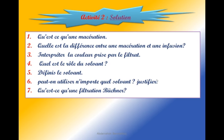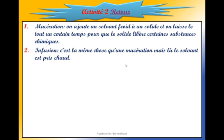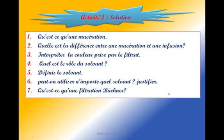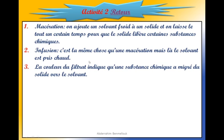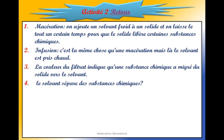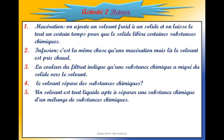Interprète la couleur prise par le filtrat : la couleur indique qu'une substance chimique a migré des solides vers le solvant. Quel est le rôle du solvant ? Le solvant sépare des substances chimiques. Un solvant est un liquide apte à séparer une substance chimique d'un mélange. Son rôle, c'est d'extraire une substance d'un mélange.